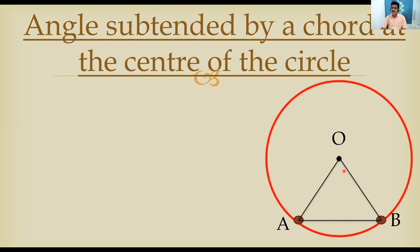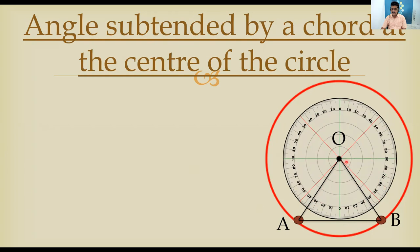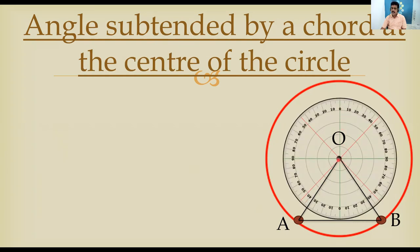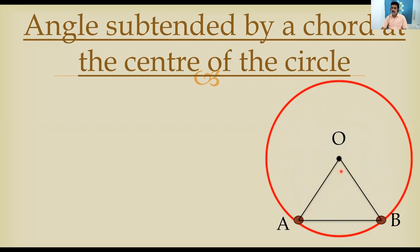Let us calculate this angle. We take a protractor and place it to measure the angle at the center — the angle subtended by chord AB at the center. For example, measuring from here to here: 10, 20, 30, 40, 50, 60, 70 degrees. So this angle is approximately 70 degrees.